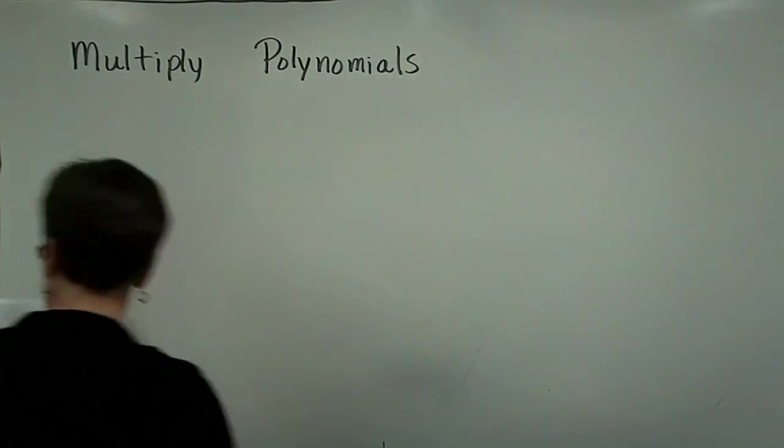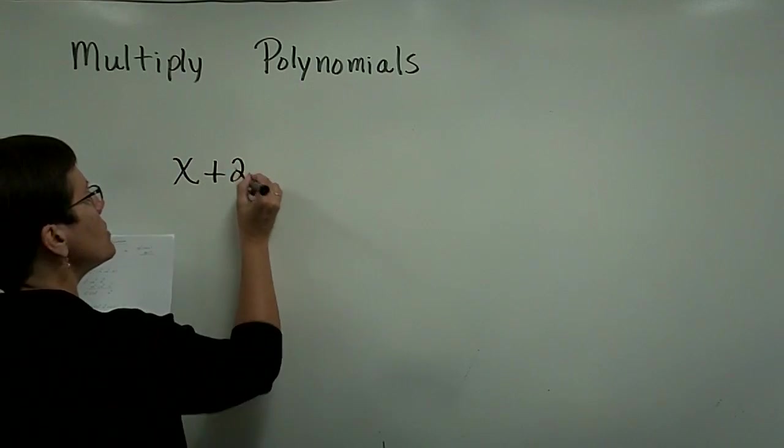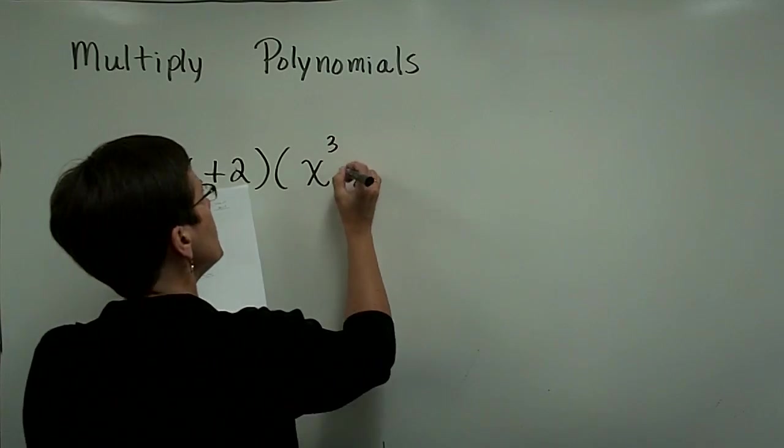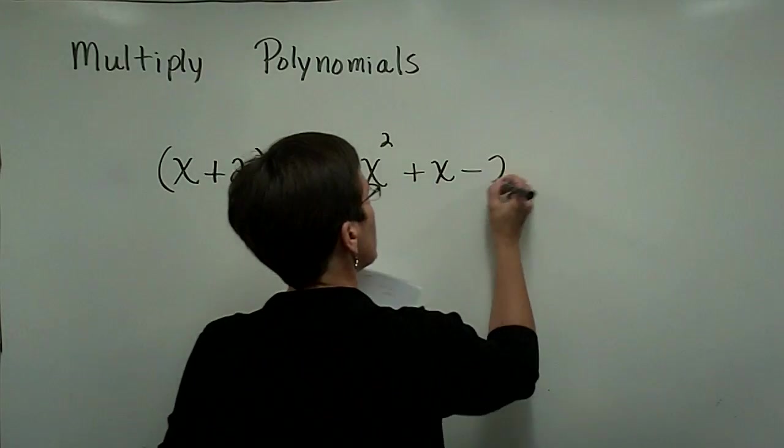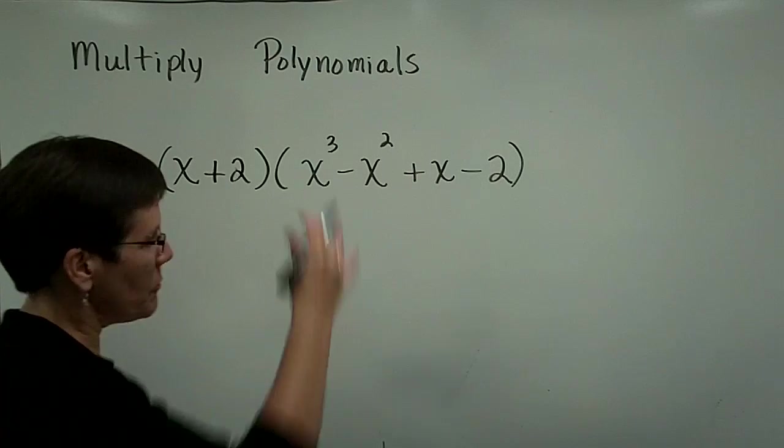Okay, this one's got some different exponents. I'd like to take the binomial x plus 2 and I'd like to multiply it by x cubed minus x squared plus x minus 2. I tend to just distribute myself, although I do like that vertical format.